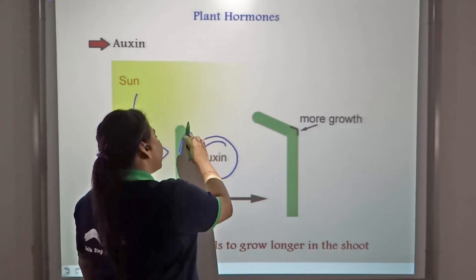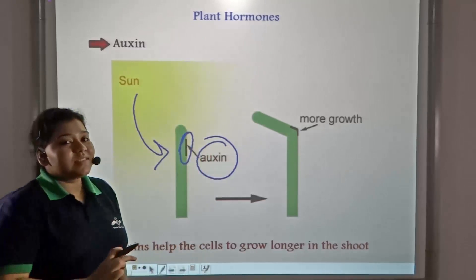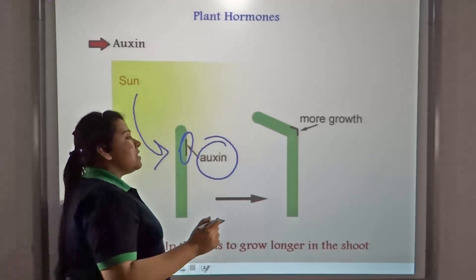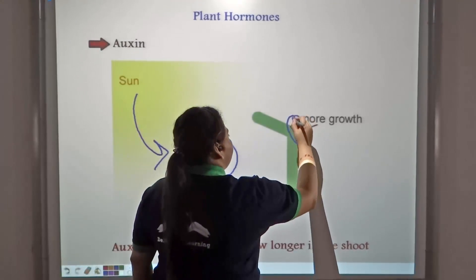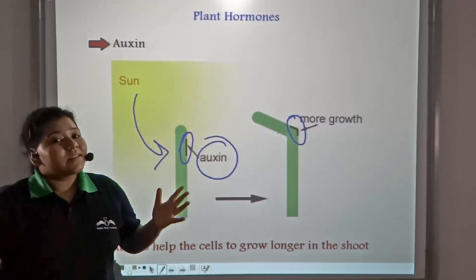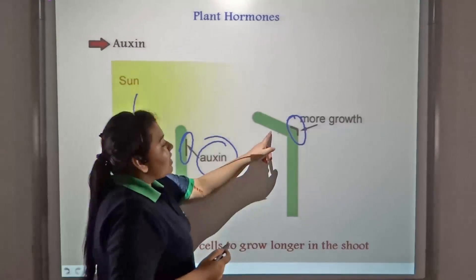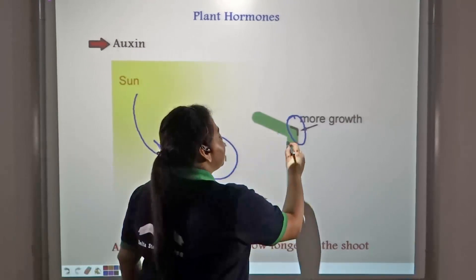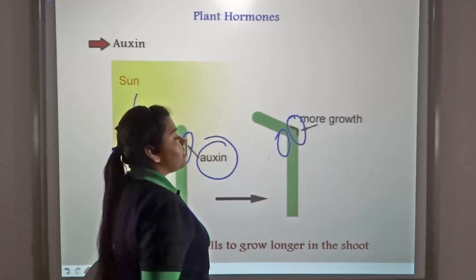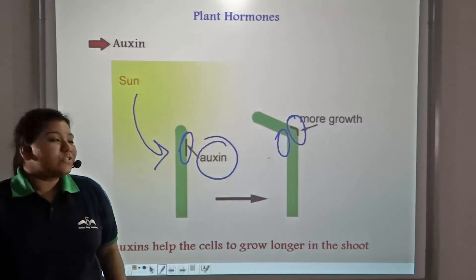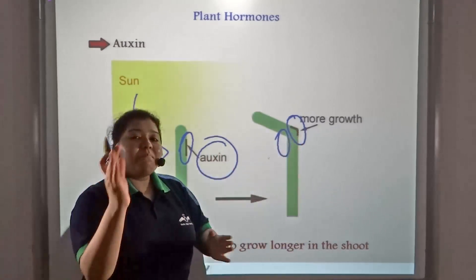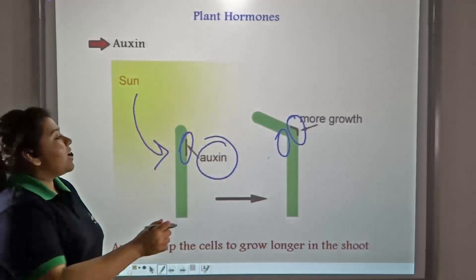The main function of auxin is to increase the length of cells. Since it is secreted on this part of the stem, it increases the cell length. The cells grow in size, but the cells do not grow in size on the other part. As a result, the stem bends towards the light source.